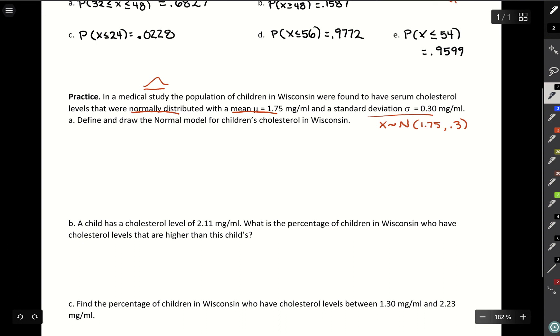So that's our definition for the model. To draw it, we draw a bell-shaped curve. Starting with the center, you just copy down the mean. Then make some marks for going maybe three standard deviations above, three standard deviations below. In fact, we could even do just two. And then we're moving this distance of 0.3. If we add 0.3, that's 2.05. Add 0.3 again, 2.35.